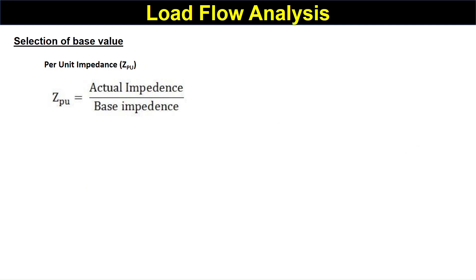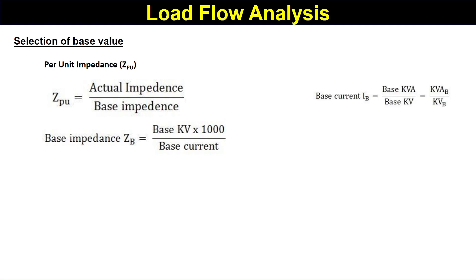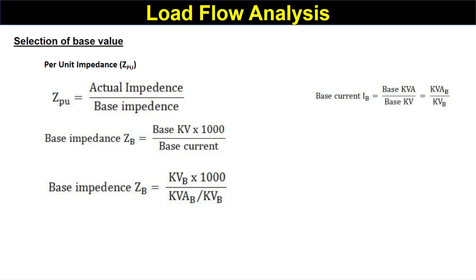Per unit impedance is the ratio of actual impedance divided by the base impedance. Base impedance equals base voltage multiplied by 1000, divided by base current. Substituting base current as base power divided by base voltage, and rearranging, the base impedance becomes base voltage squared multiplied by 1000, divided by base power.